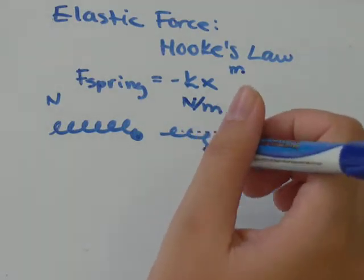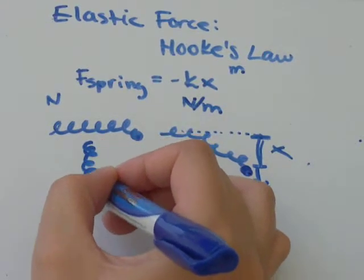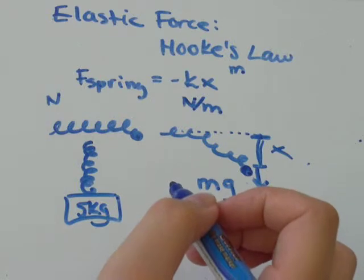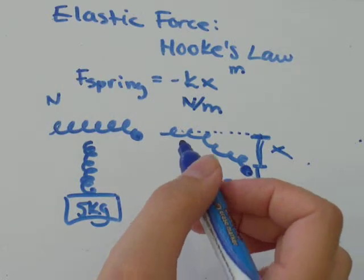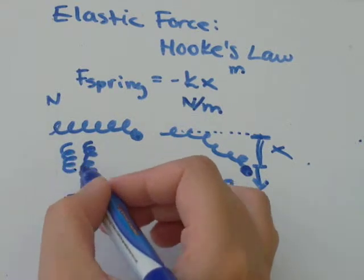We've got a 5 kg mass on the end of a vertical spring. So it's a spring like this, and there's 5 kgs on the bottom.